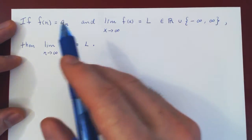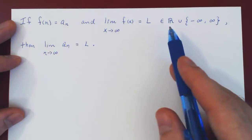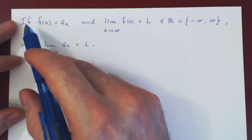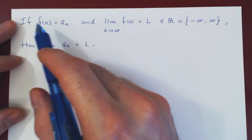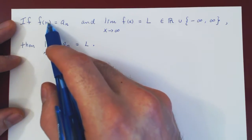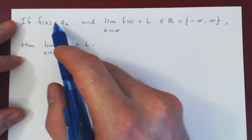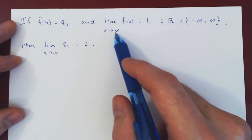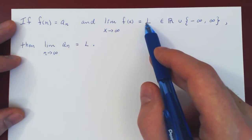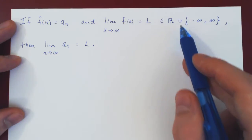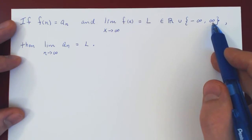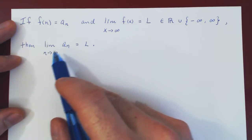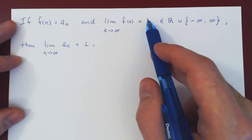In this video we will discuss the following result and then look at four examples. If f(n) equals the nth term of our sequence a_n, and the limit of f(x) as x goes to infinity equals L — where L is either a real number or negative or positive infinity — then the limit of our sequence a_n as n goes to infinity is also equal to L.